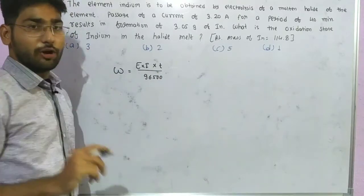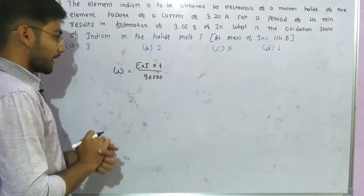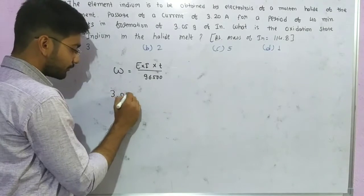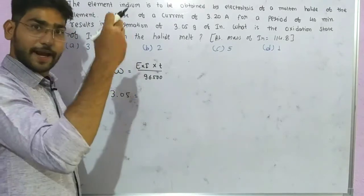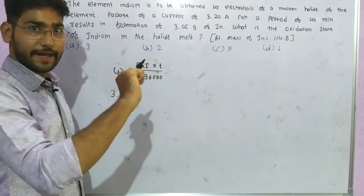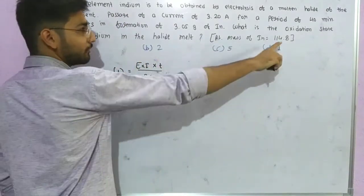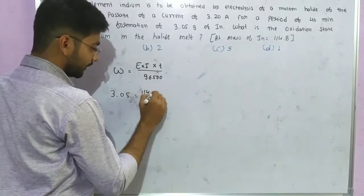We have to find the oxidation state of indium. The weight deposited is 3.05 gram of indium. Applying the formula: weight equals equivalent mass of that element into current into time upon 96,500 coulombs.